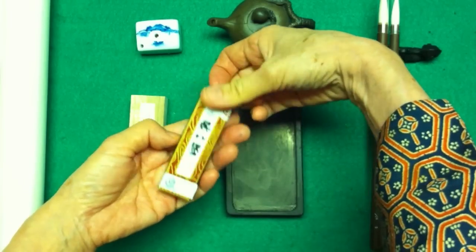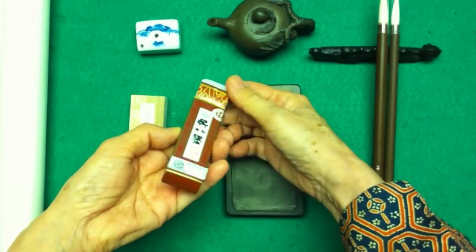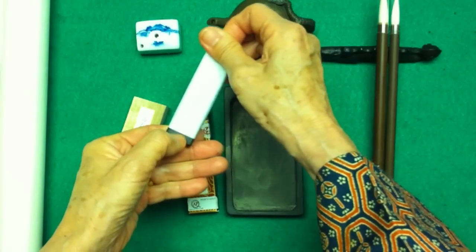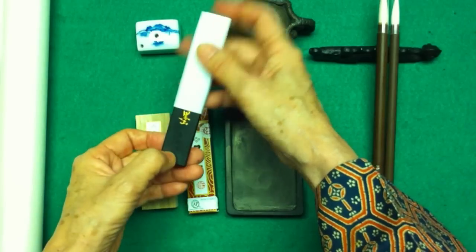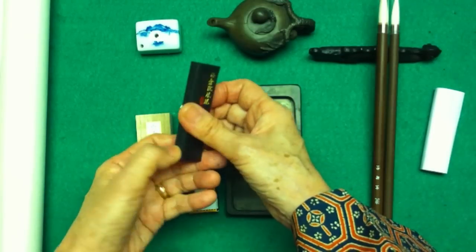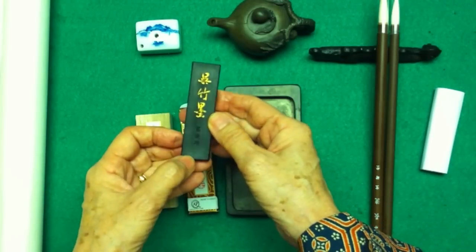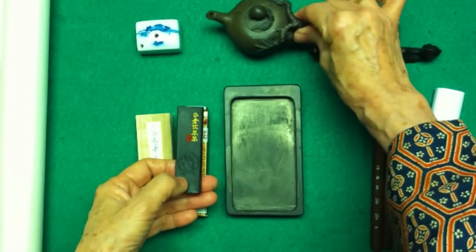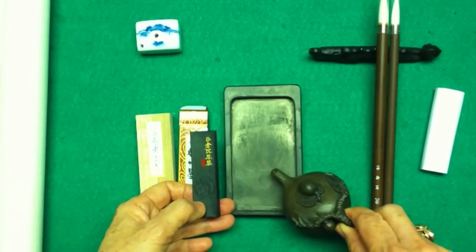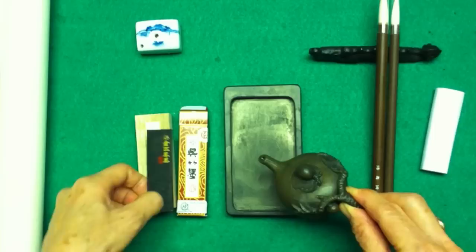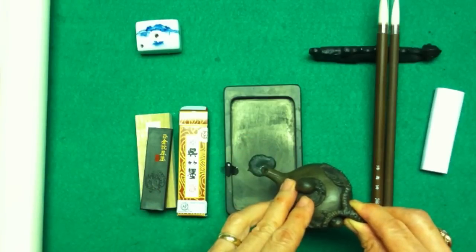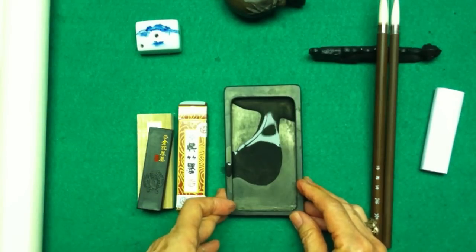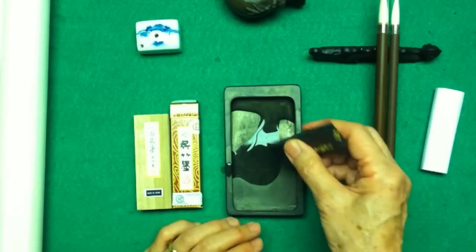This is basic student sumi ink, which is made of soot from either oil-based lamp or wood soot, called kuratake. When you have sumi and the slate stone with water, let's see, there's a little bit of a drop there.